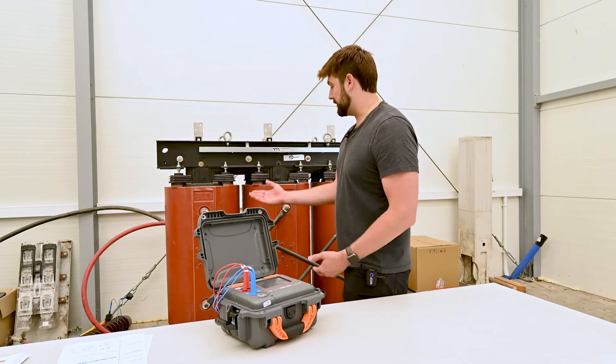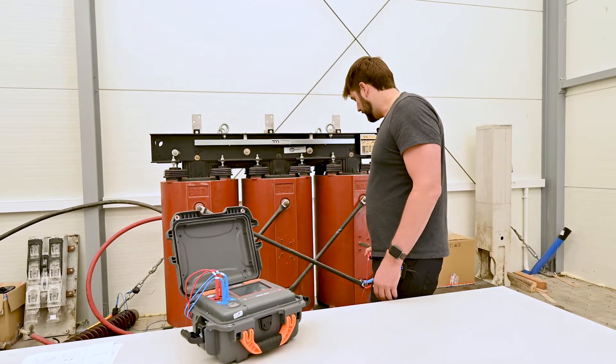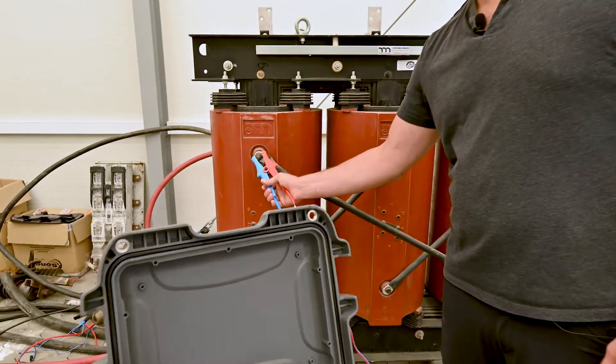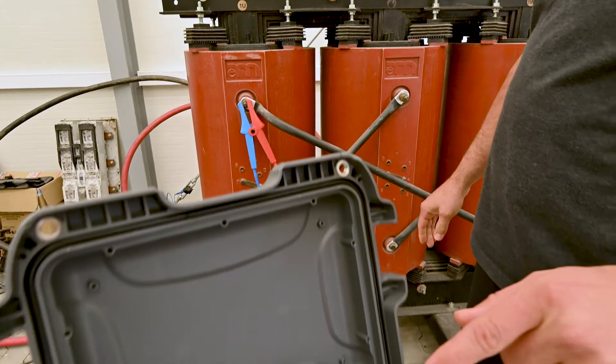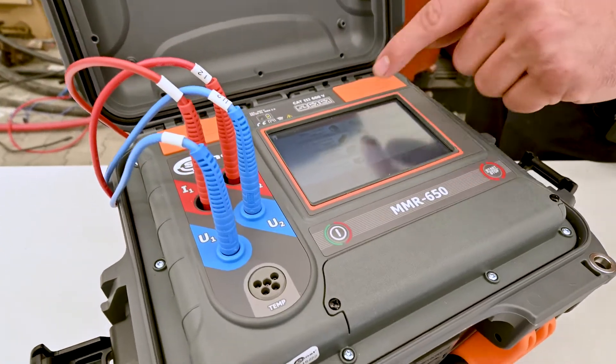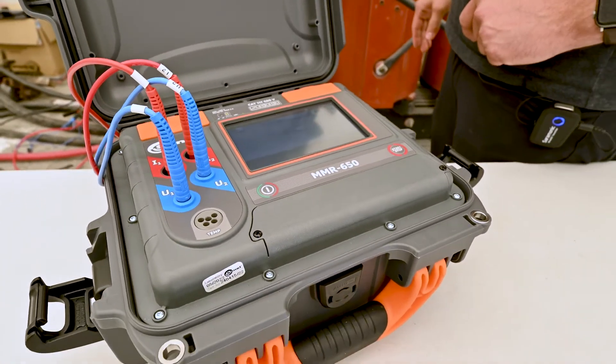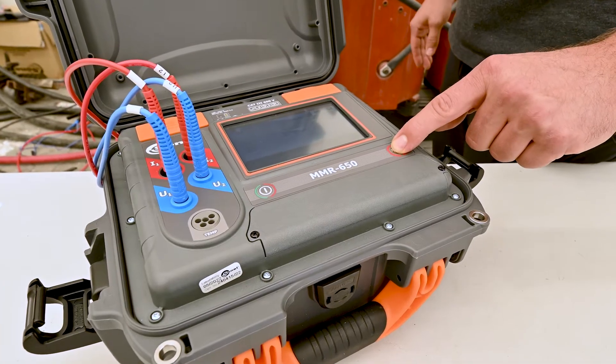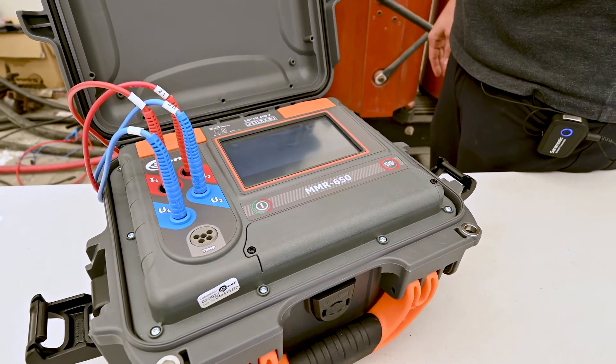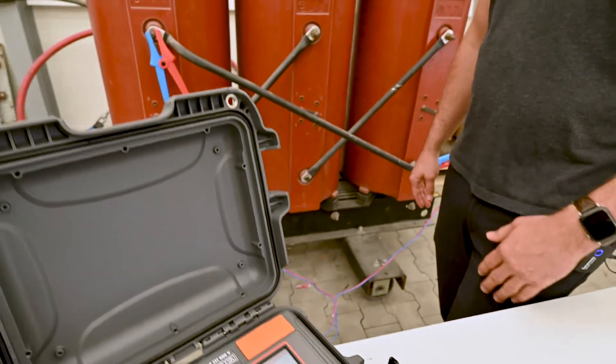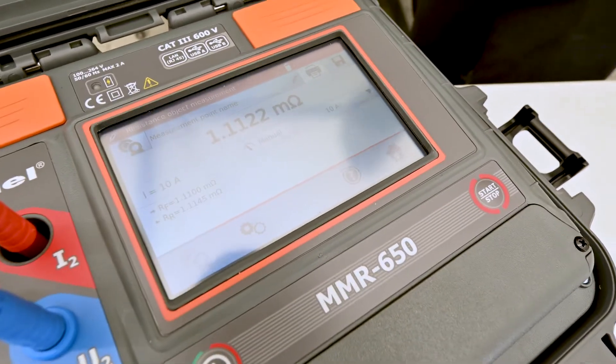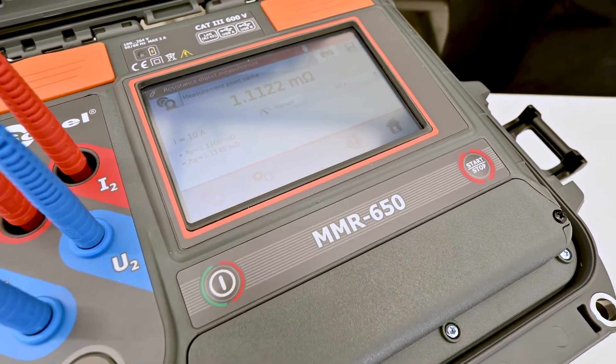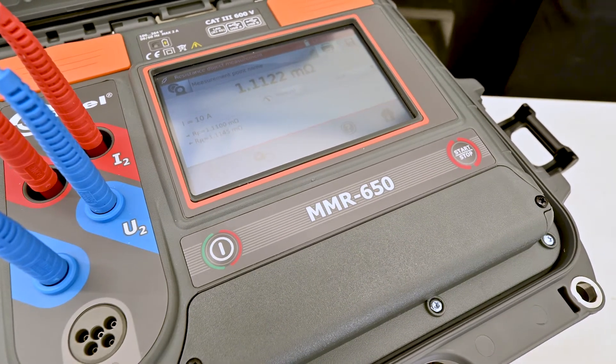So if I want to know the resistance of this jumper, I can just move across to here and I'm going to select resistance object measurement. The test should be much faster. There it is, 1.1 milliohms. Much faster when you're just going through a nice conductor that doesn't have a big coil.